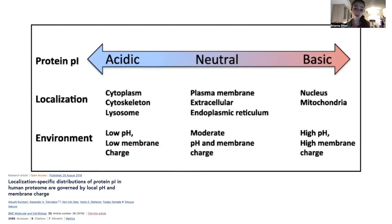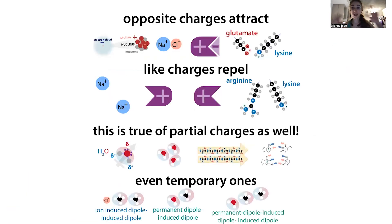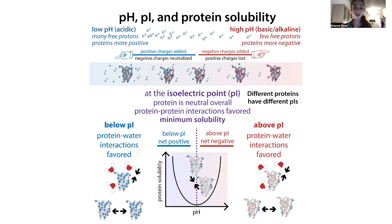There are a couple of things that make it more favorable or unfavorable for a protein to have a particular charge. Proteins don't want to be too charged because then they're going to be either sticking to things really strongly — because opposite charges attract — or repelling things really strongly because like charges repel. But they're also not going to want to be neutral, because then they can't interact with things, especially water. If the protein is all neutral, water won't hang out with it, and proteins will clump together, aggregate, and become insoluble.